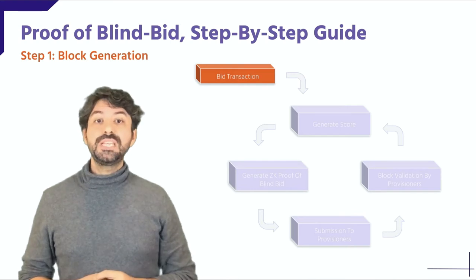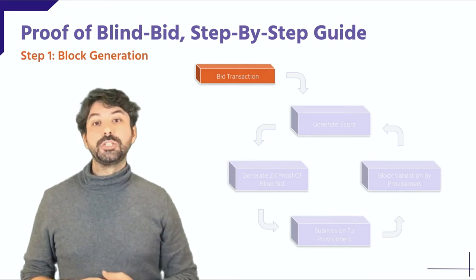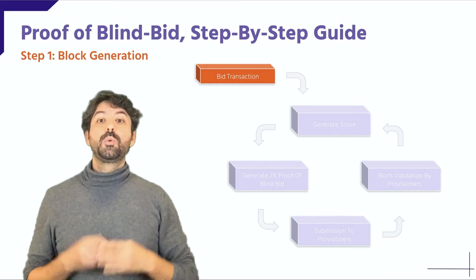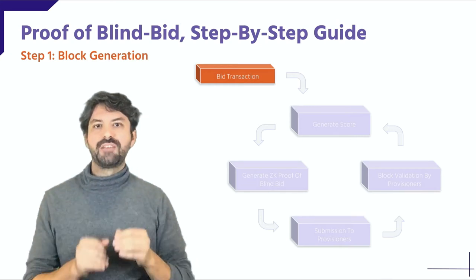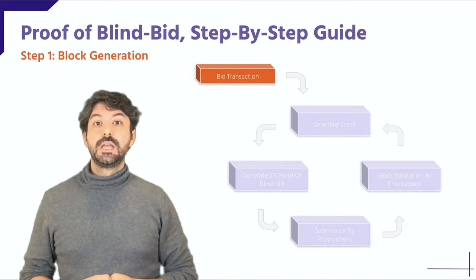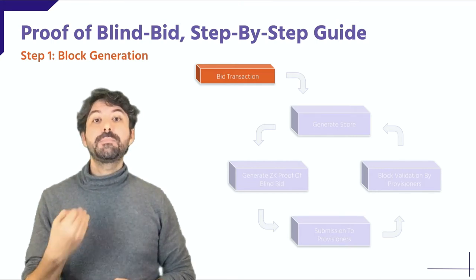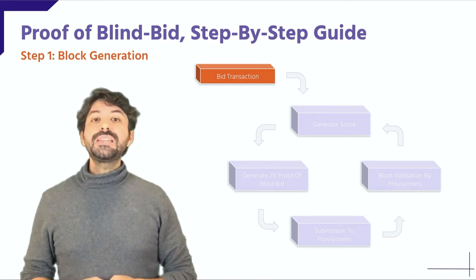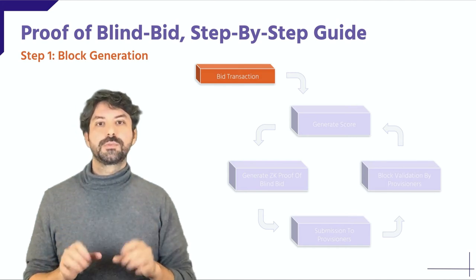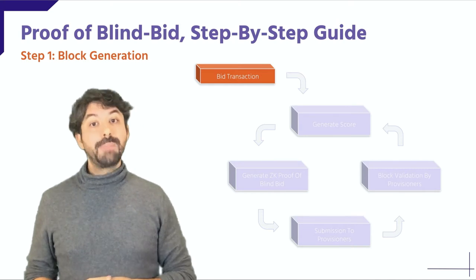Step 1. The procedure begins when a participant propagates a bid transaction. Bid transactions include: the amount of Dusk to be staked, and a string of bytes called the secret. In this first step, we see the identity of the participant remaining private through the creation of a stealth address, the amount to be staked remaining private through a Pedersen commitment, and the secret key remaining private through hashing. The bid transaction is stored in the bid contract storage — in a Poseidon tree — and remains valid for a number of rounds.